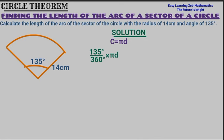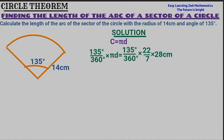Now I'm going to replace pi and the diameter with their actual values. We write 135 degrees divided by 360 degrees, multiplied by pi. The pi I'm going to use is 22 over 7. We then multiply by the diameter. We're not given the diameter, but we're given the radius of 14 centimetres. Since the radius is half the diameter, the diameter will be 28 centimetres.